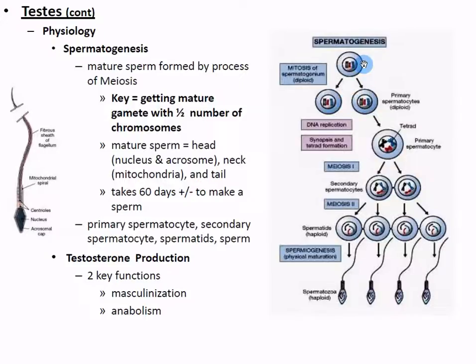That paternal age has risks too - it increases the risk of things like achondroplasia (dwarfism), autism, schizophrenia, and progeria. Progeria is where children around age 10 look like they're 90 because it's a rapidly aging disease that makes them age very quickly.